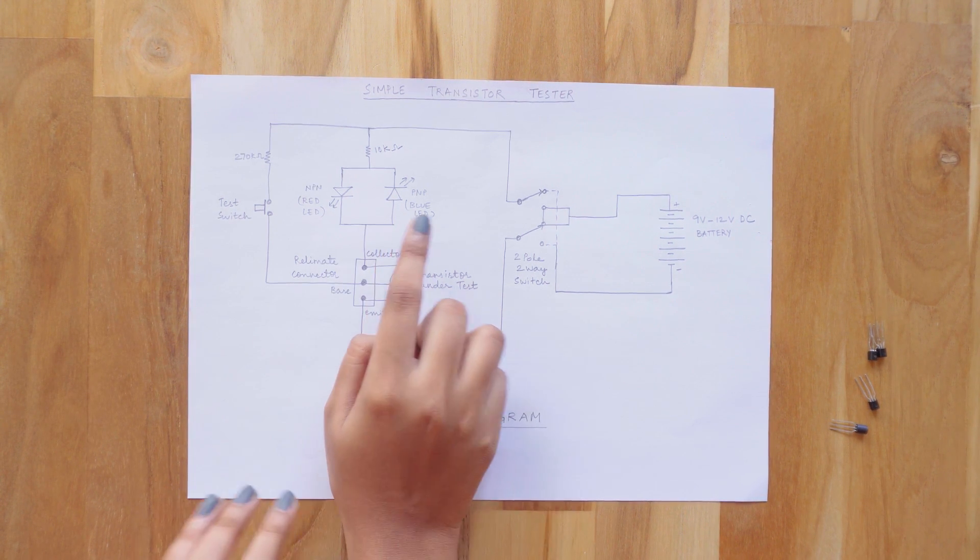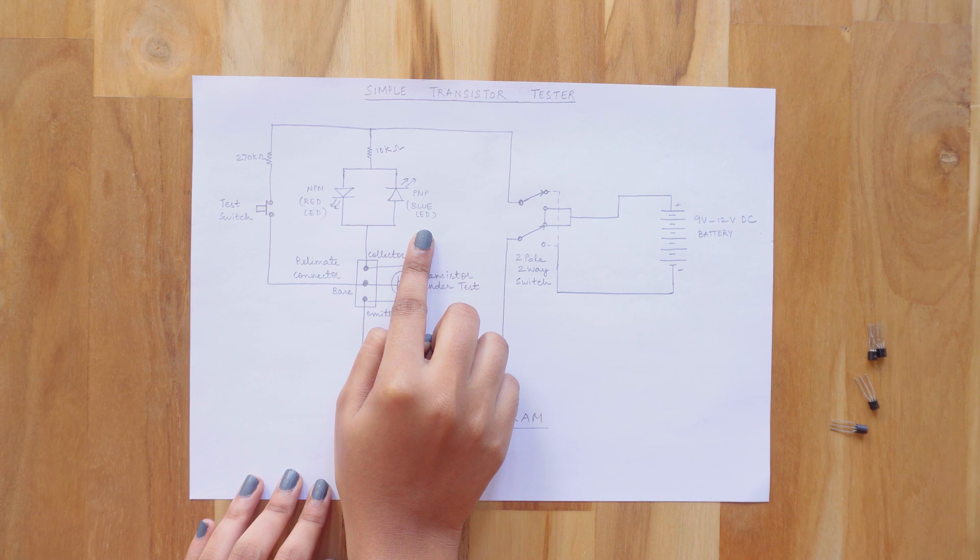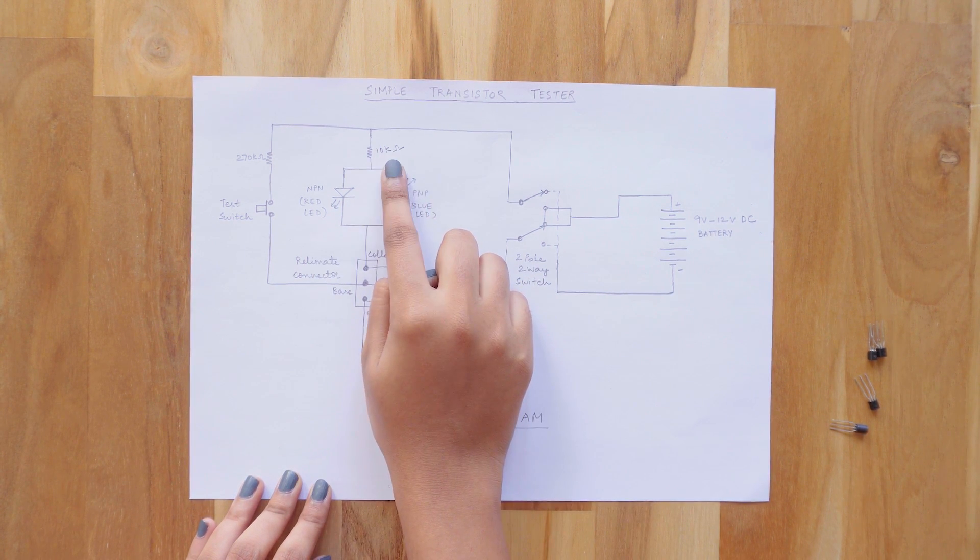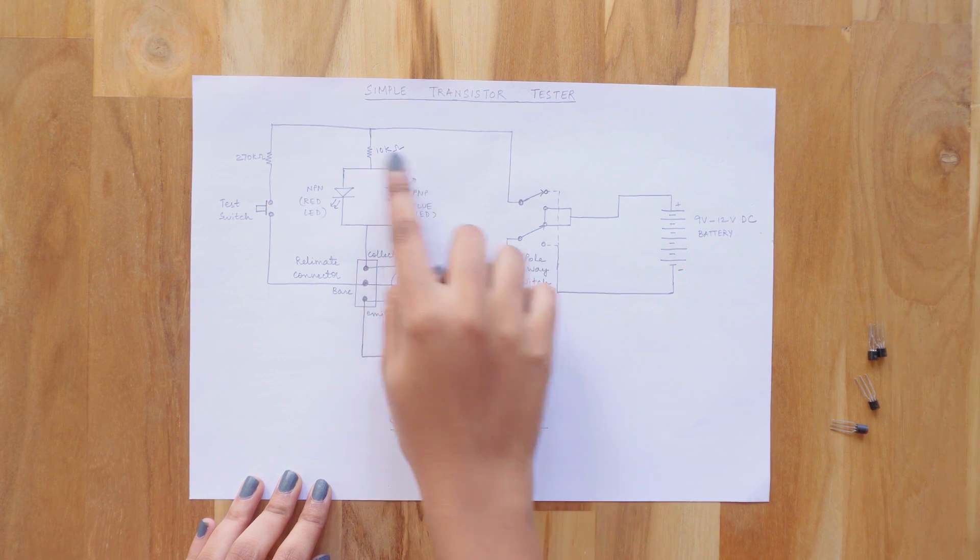These are the two LEDs in which I have used blue one to detect PNP and the red one to detect NPN transistor. This is a 10K resistor used as a current limiter for LEDs.